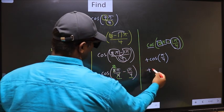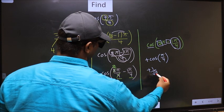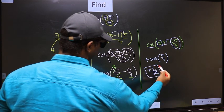So plus cos π by 4 is 1 by root 2. So this is our answer.